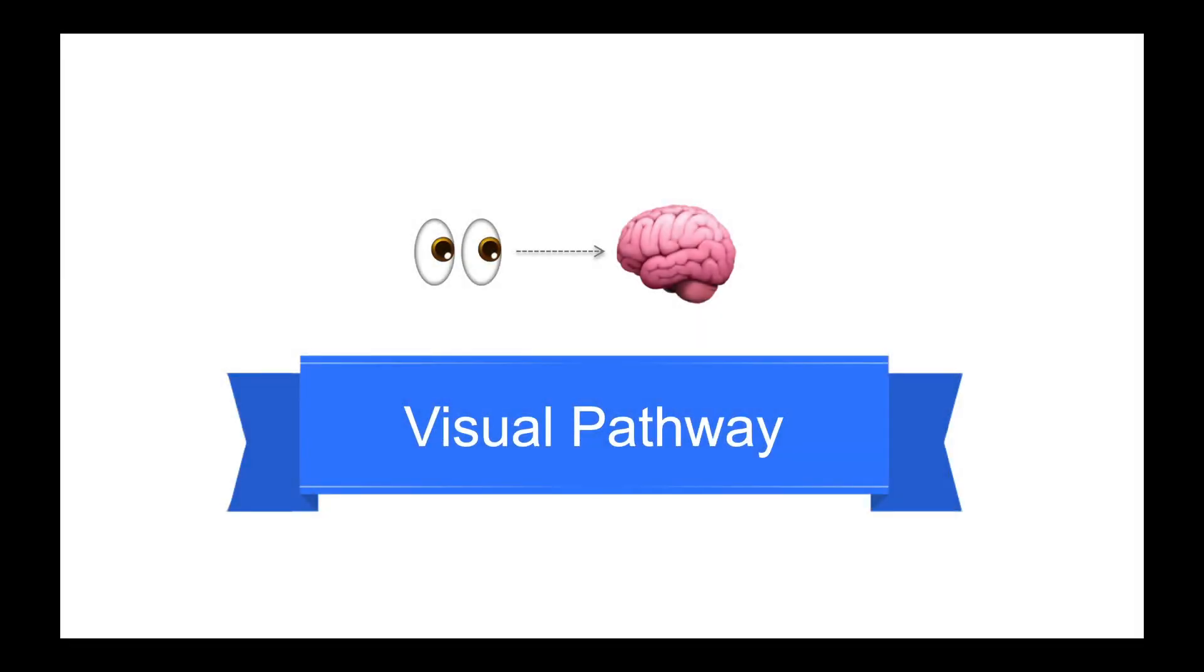The route from simple light detection in the eye to complex visual experience in the brain involves an orderly projection through several structures.